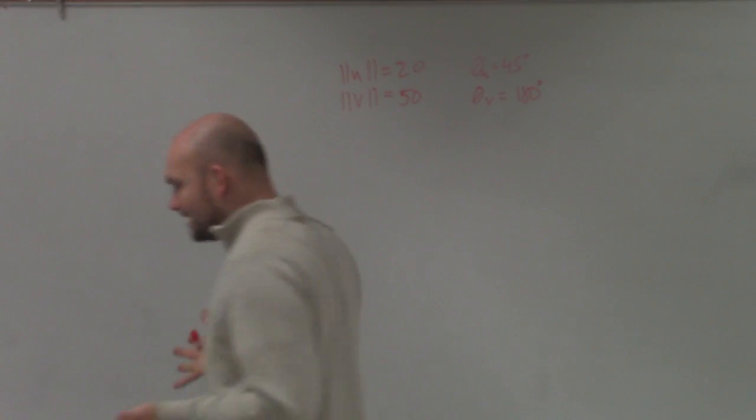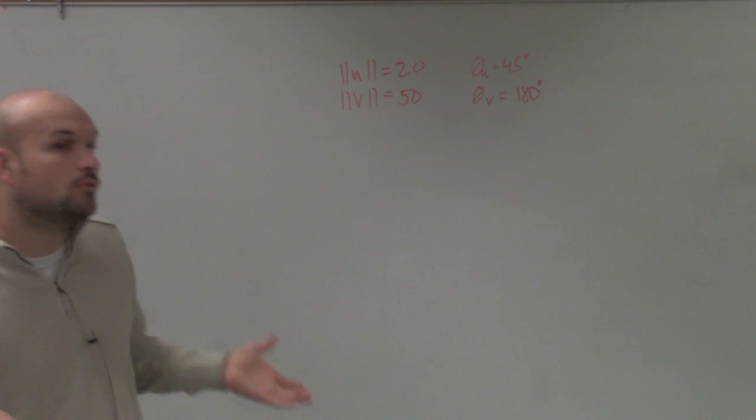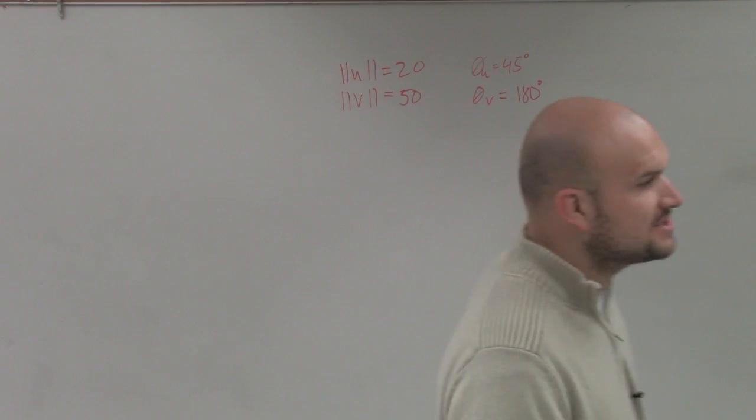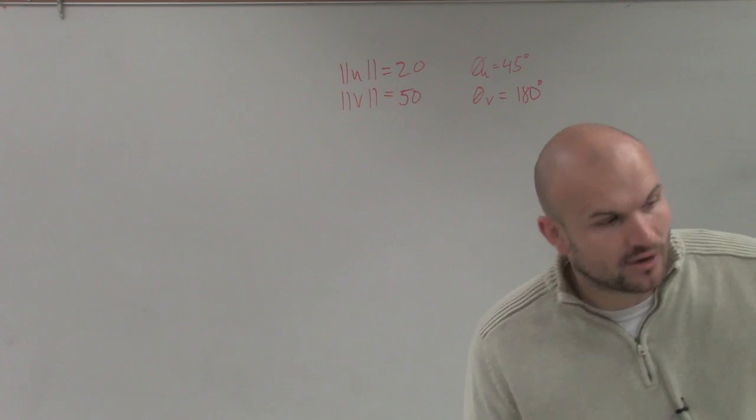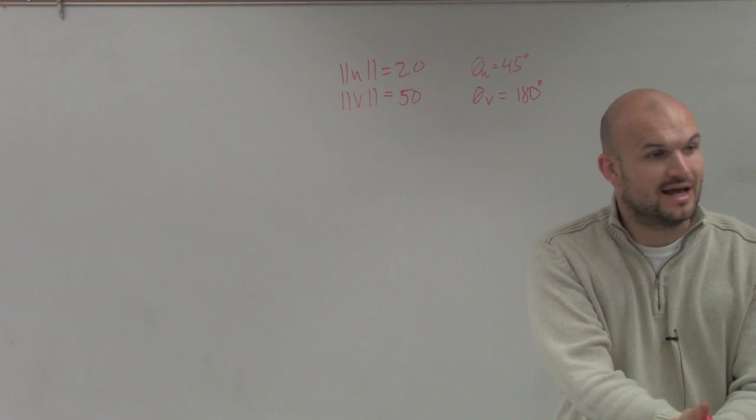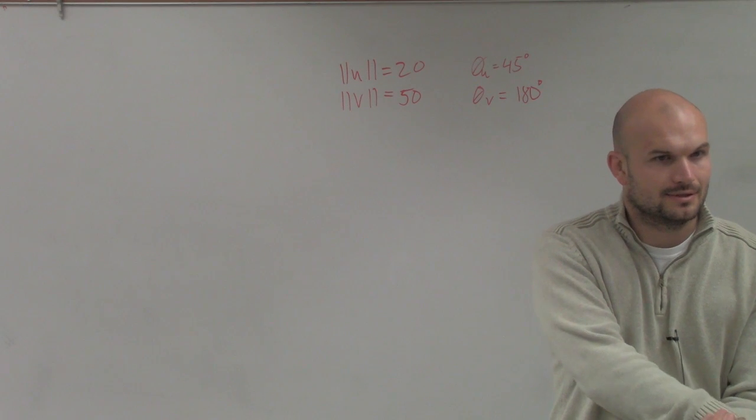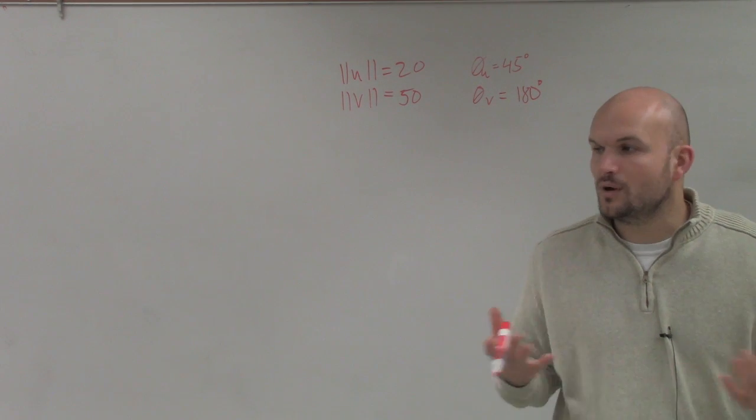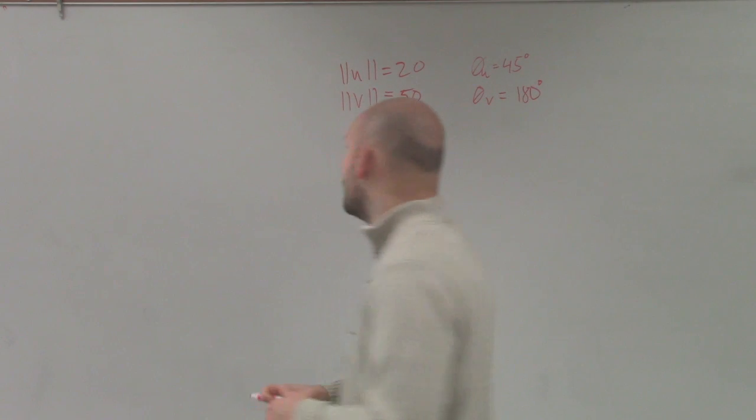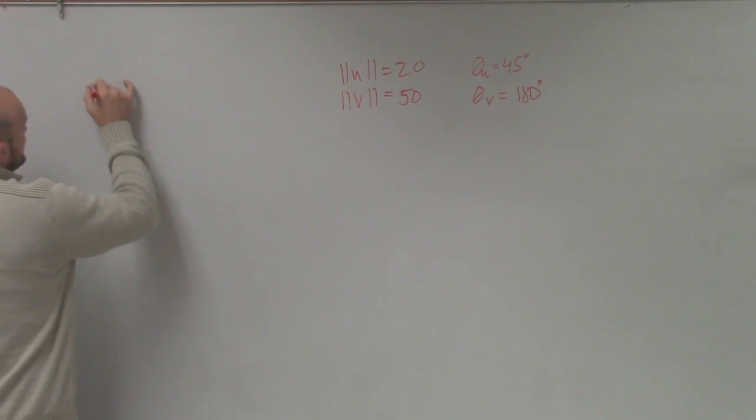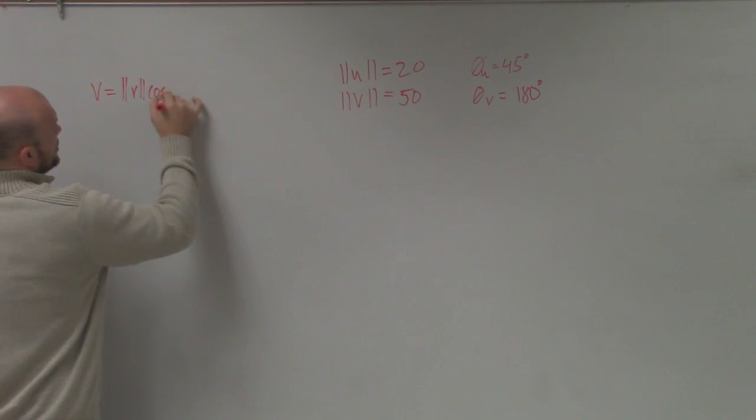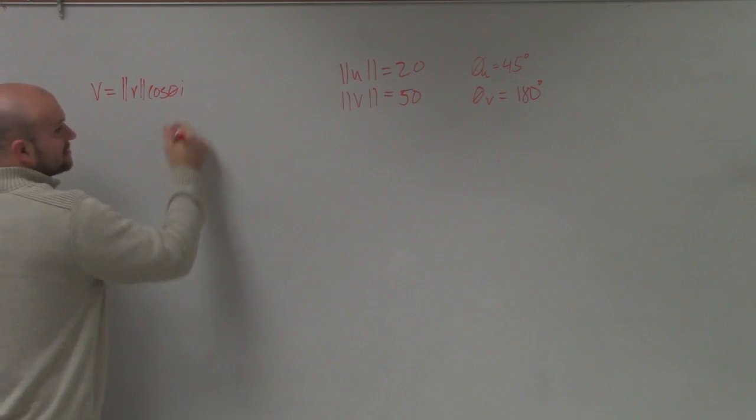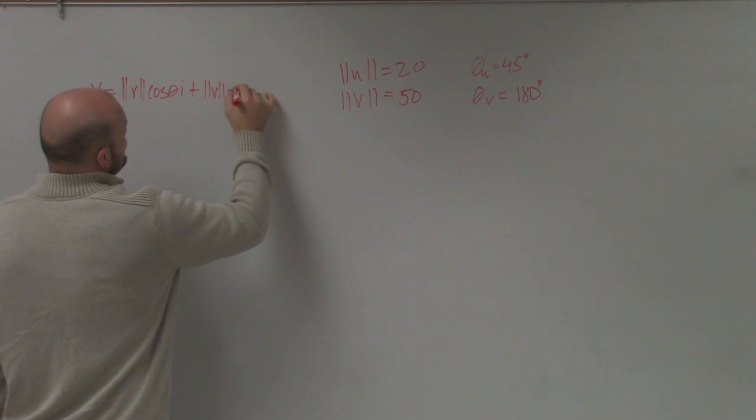What we went over last class period, which was to help us solve the word problem, was to be able to write this in our component form when we have a direction of an angle. We have a direction for our angle as well as a magnitude. And if you guys remember what we had, what we wrote was v equals the magnitude of v times the cosine of theta i